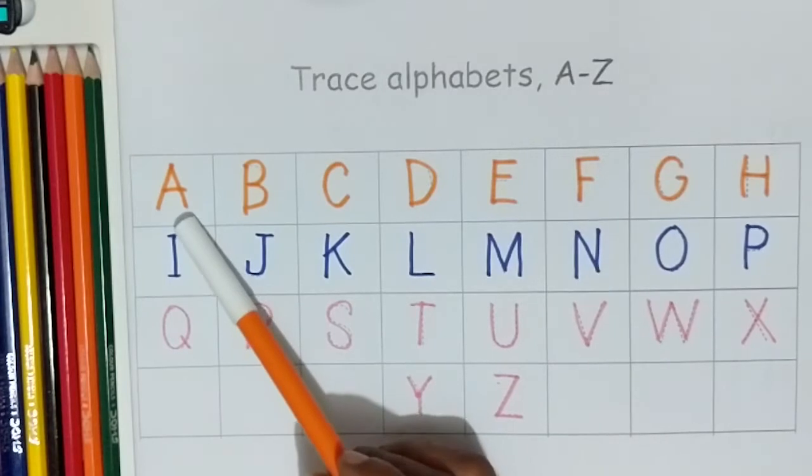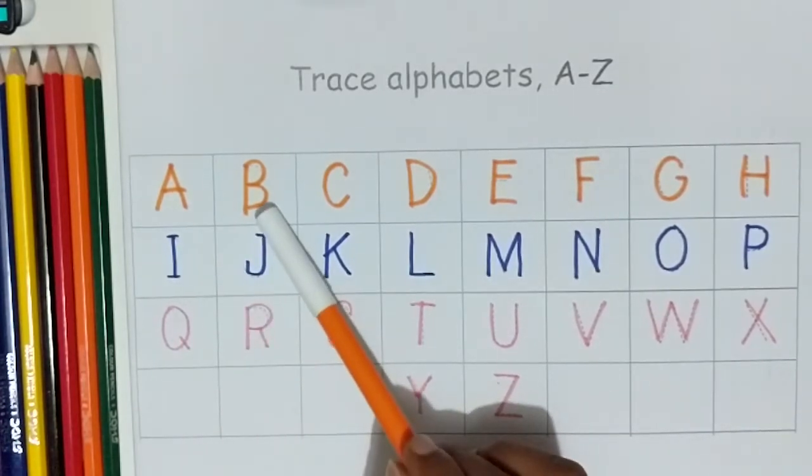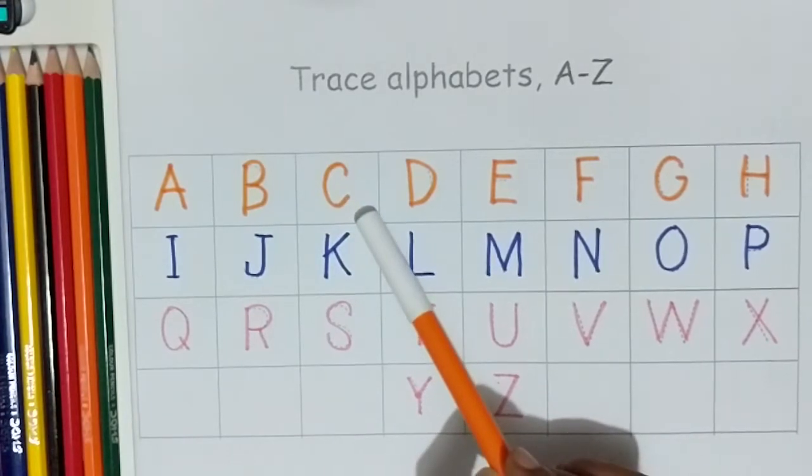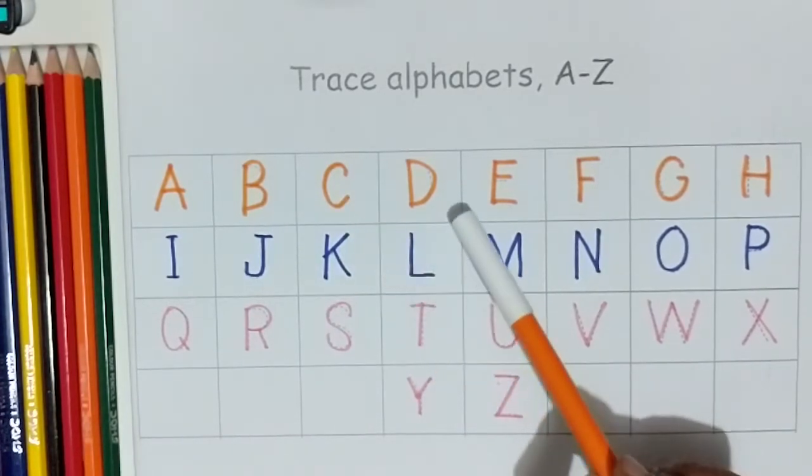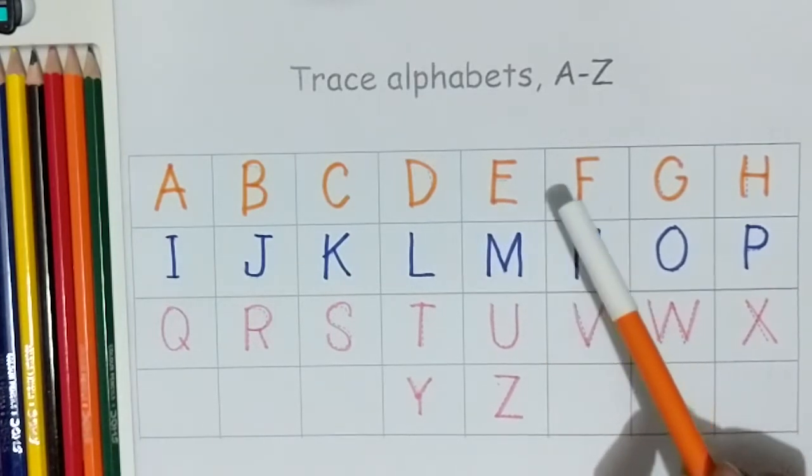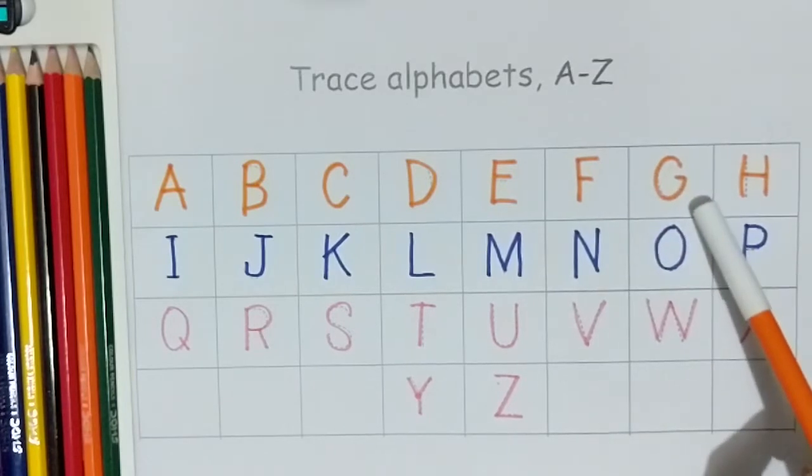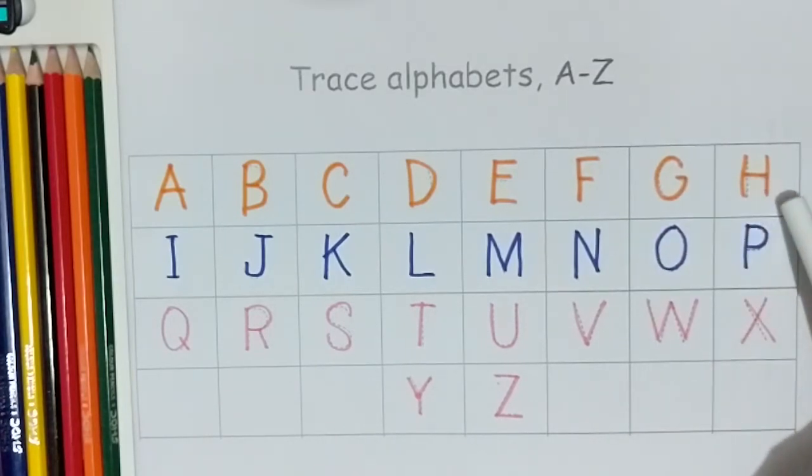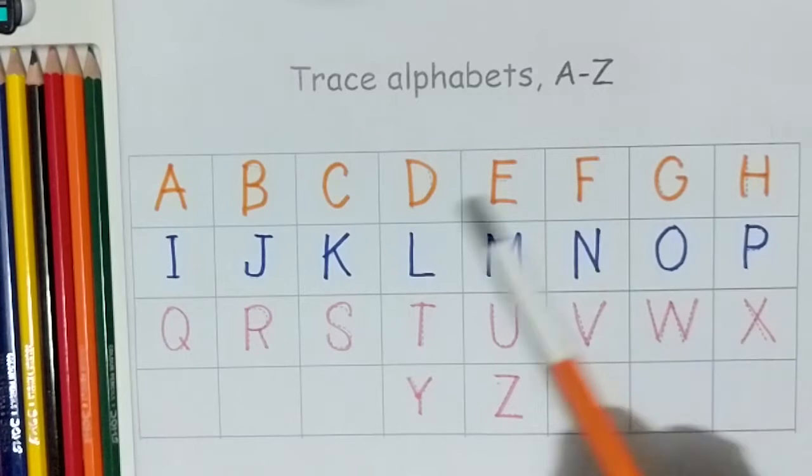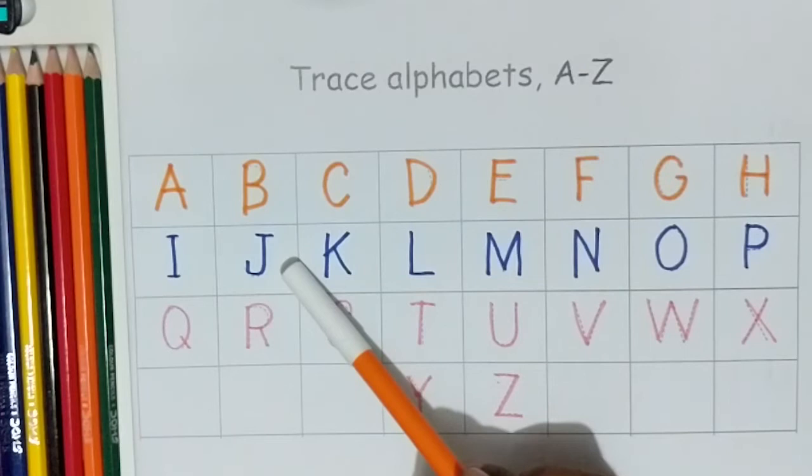A is for Apple, B is for Ball, C is for Cat, D is for Doll, E is for Elephant, F is for Fish, G is for Grass, H is for Hand, I is for Ice Cream, J is for Jackfruit.